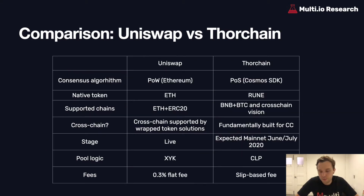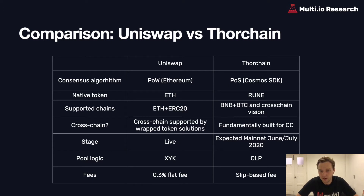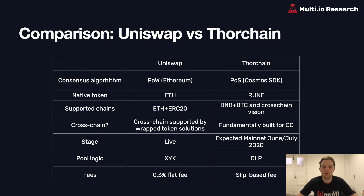The close comparison to ThorChain is Uniswap, however there are some main differences. Uniswap runs on a proof-of-work consensus algorithm, namely Ethereum. ThorChain is a proof-of-stake network using the Cosmos SDK. Uniswap does not have a native token, which means that the value creation technically is built around ETH. ThorChain has its own network token, RUNE.